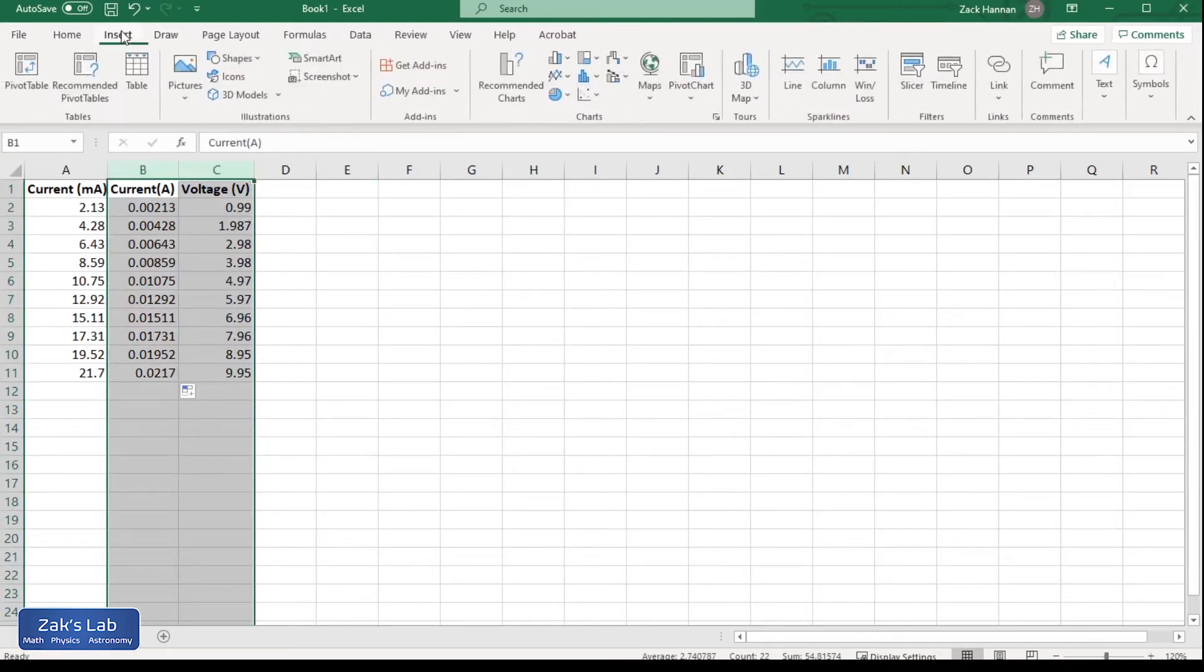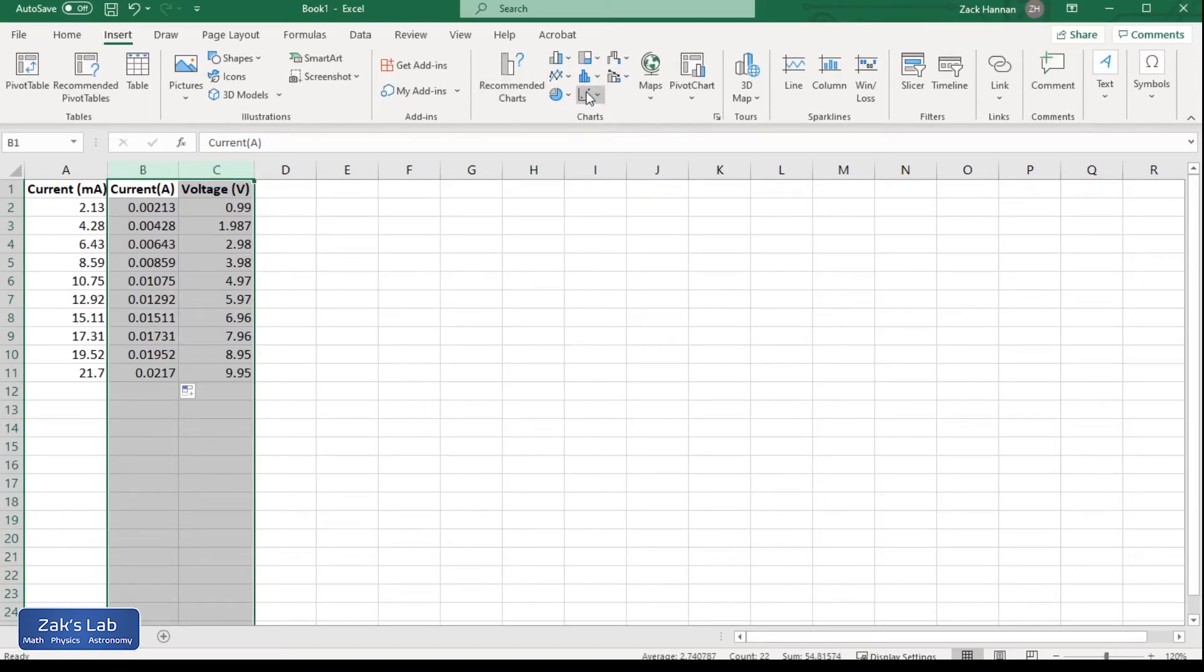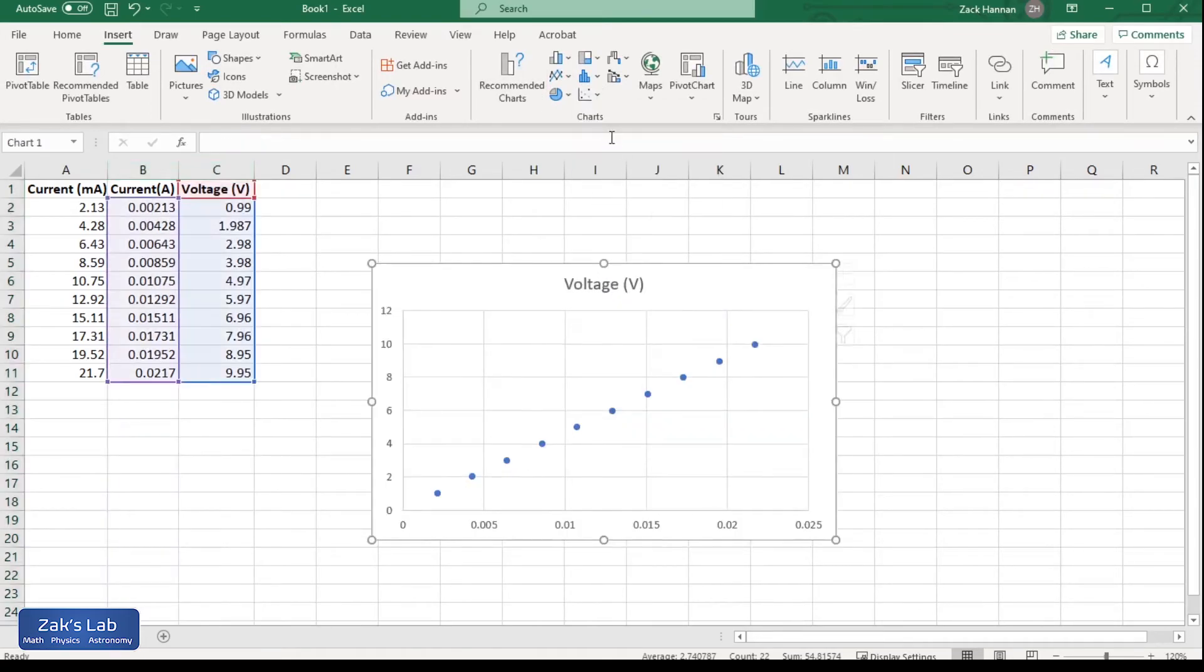And then we're going to insert scatter plot. And I'm already encouraged that this looks extremely linear and like it's going to pass through the origin.